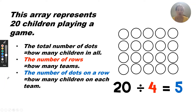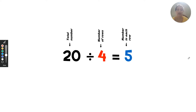That is our divisor, four — there are four teams. The quotient is how many on each team, so there are five in each row, meaning there are five children on each team. That is our quotient. Looking at the division equation by itself: 20 is the biggest number — we always start with the total. Four is the number of rows, that's how many parts we're dividing the 20 by, so 20 divided by four. The five is the number in each row: 20 divided by four equals five in each row.